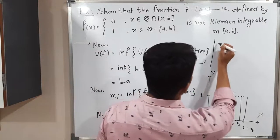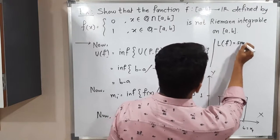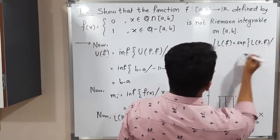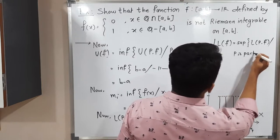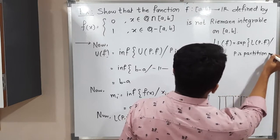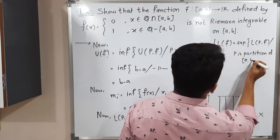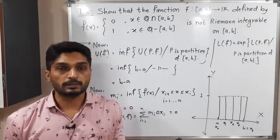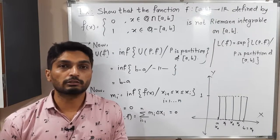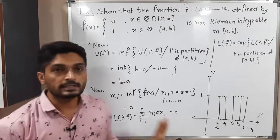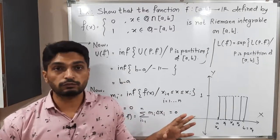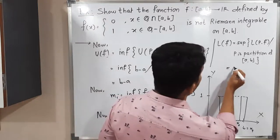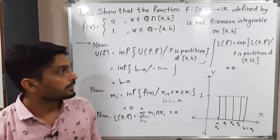The lower integral is defined as the supremum of L(P,f) over all partitions P of [a,b]. Since L(P,f) = 0 for every partition of [a,b], the supremum is also 0. Therefore the lower integral equals 0.